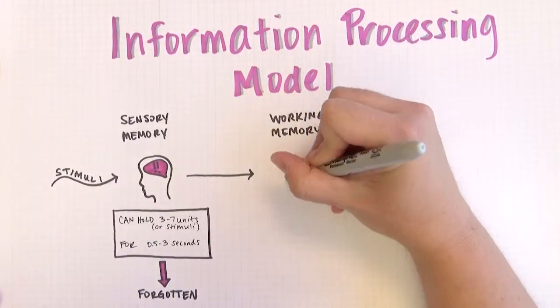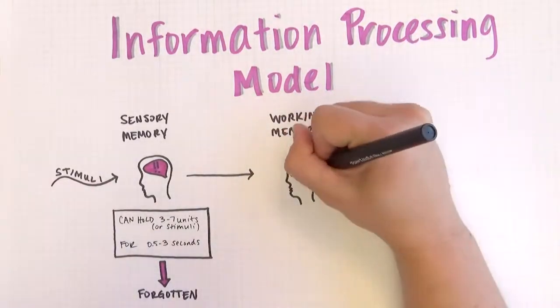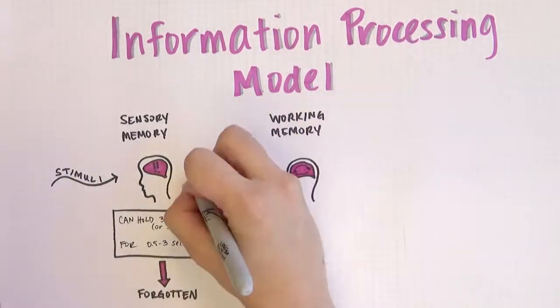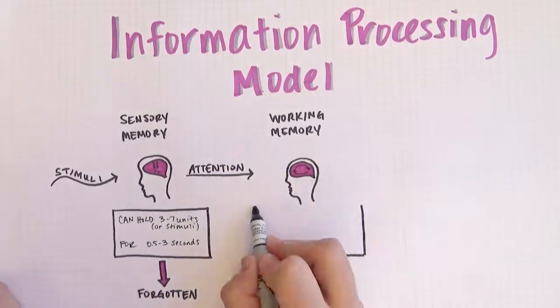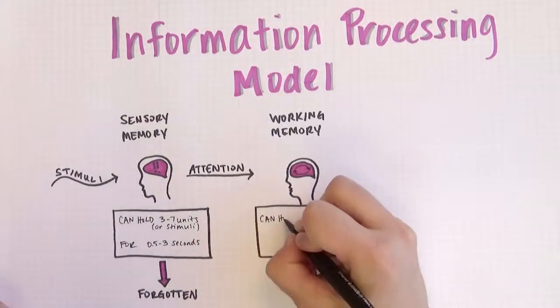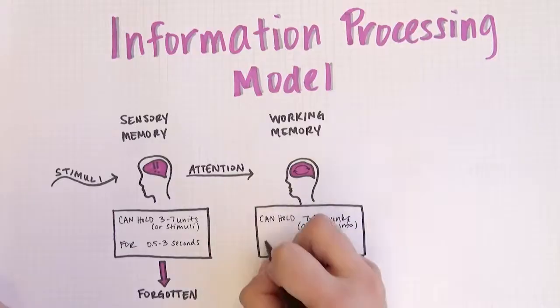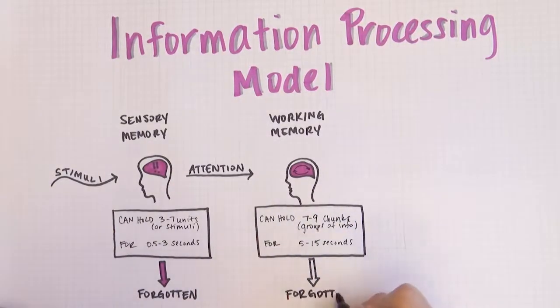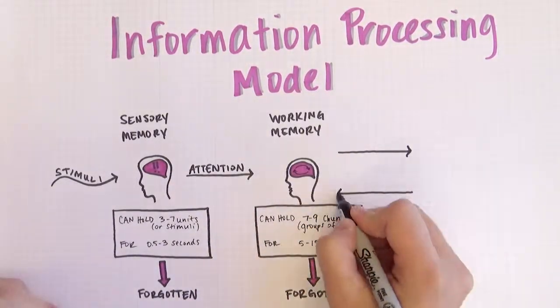Working memory is limited in capacity, how much we can hold there, and duration, how long we can hold it. Working memory can only hold 7 to 9 items of information. That's like a phone number. And it can only hold that information for 5 to 15 seconds.